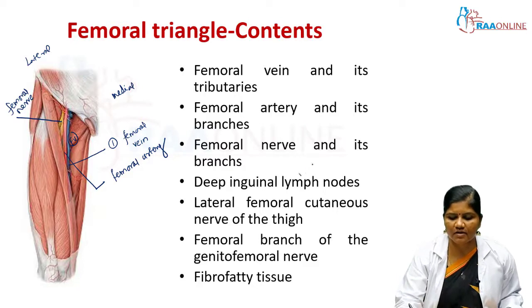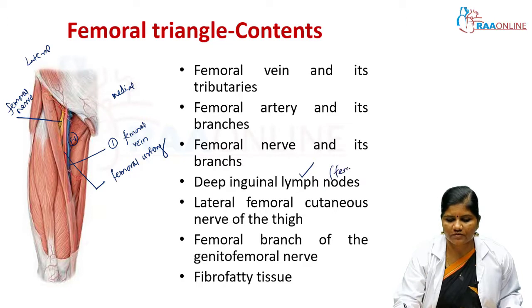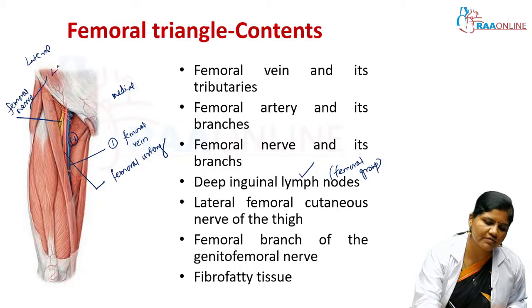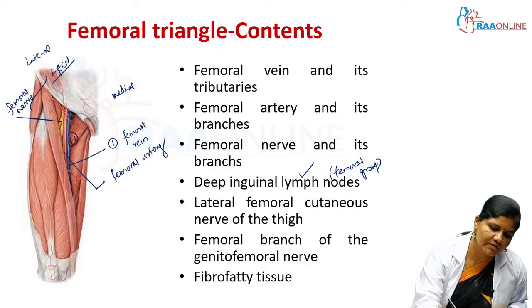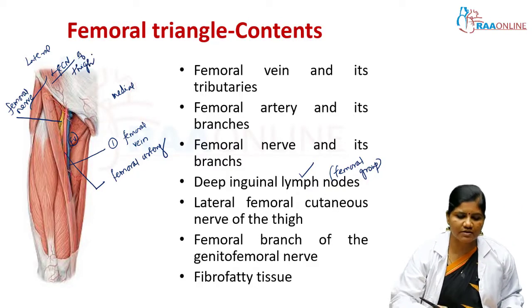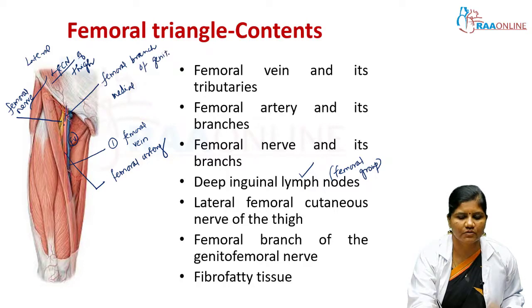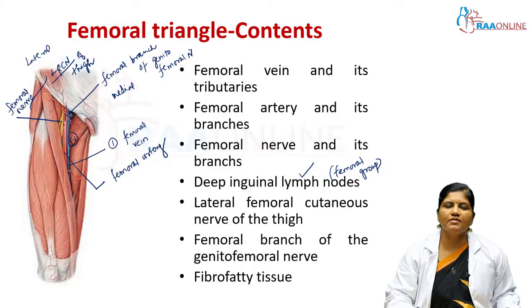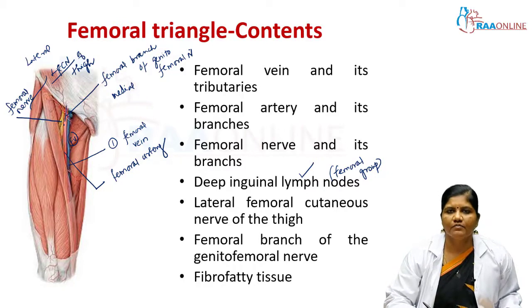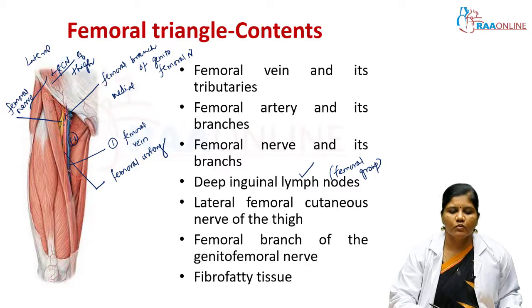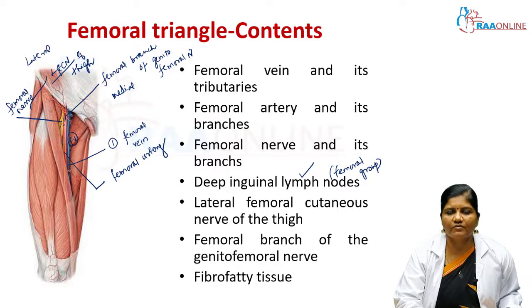The main contents are the femoral vein and tributaries, femoral artery and branches, femoral nerve and branches, deep inguinal lymph nodes (femoral group), lateral femoral cutaneous nerve of thigh, and femoral branch of genitofemoral nerve within the femoral sheath alongside the femoral artery. Some fibro-fatty tissue is also present.